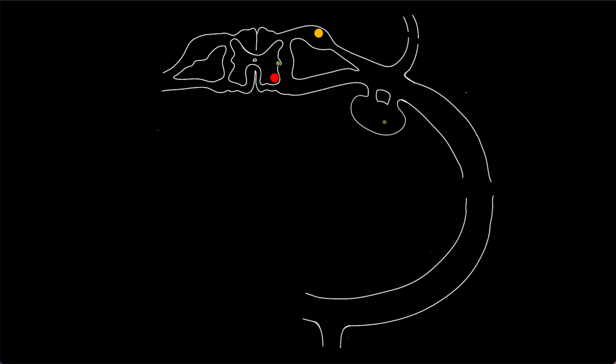Now let us look into this schematic picture. The structure circled in orange is the ventral root. And this other structure is the dorsal root. This swollen part within the dorsal root we call the dorsal root ganglion.